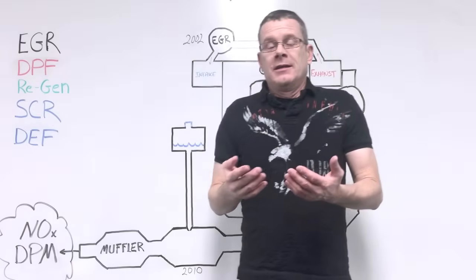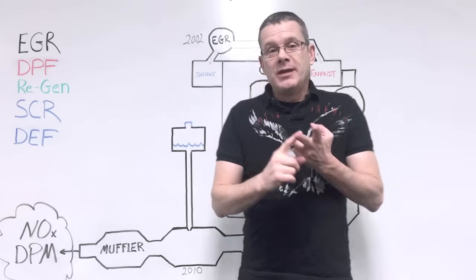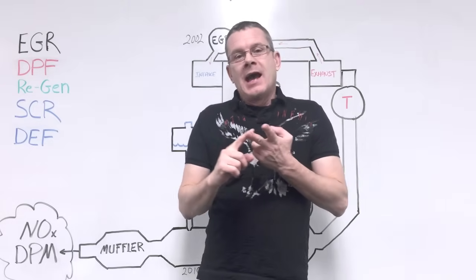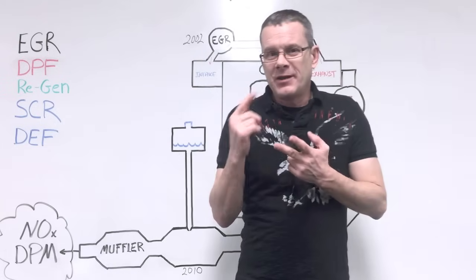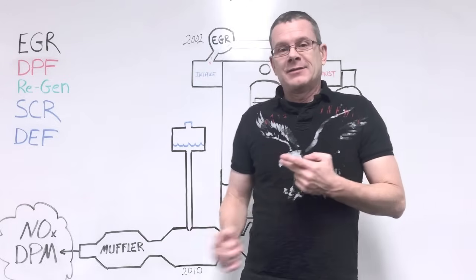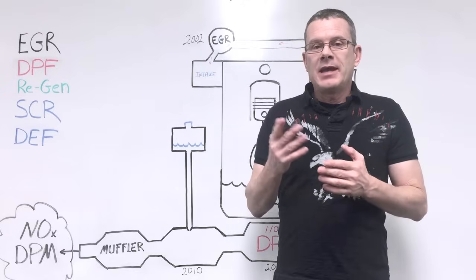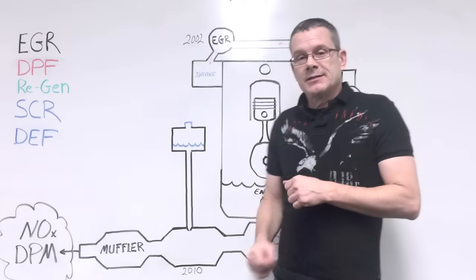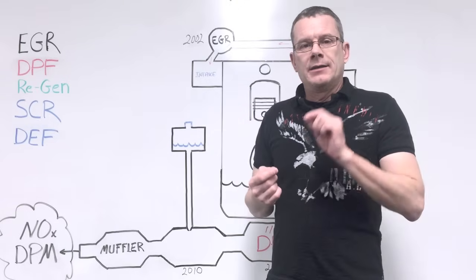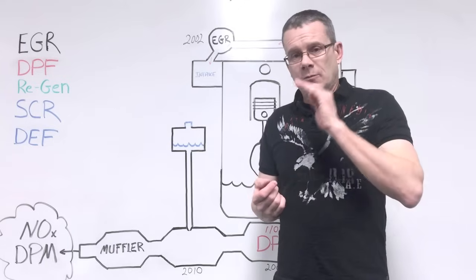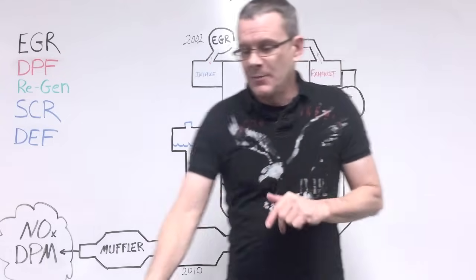Now we've got the EGR dropping nitrous oxides, and we've got the DPF dropping DPM, or soot, that comes out the tailpipe. However, remember the DPF, diesel particulate filter, needs some very high temperature to bring that soot level down. And remember, high temperatures create nitrous oxides. So the EPA decided then, in 2010, that it was time to work on those nitrous oxides again. The levels for nitrous oxides were lowered, and the car manufacturers had to come up with a way to make that happen.